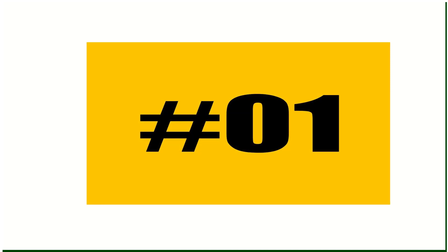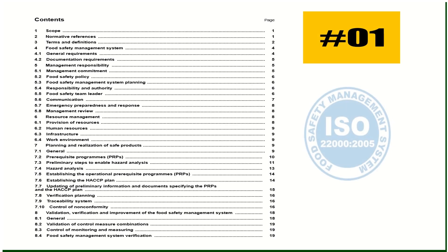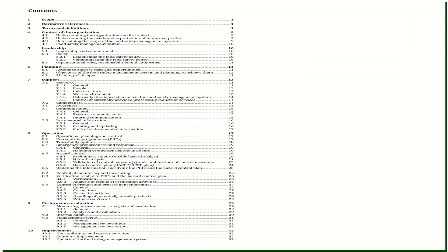Change number one. Previously there were eight major clauses: scope, normative reference, terms and definitions, food safety management system, management responsibility, resource management, planning and realization of safe product, and validation, verification and improvement of the food safety management system. Now there are ten clauses due to the adoption of HXSL.